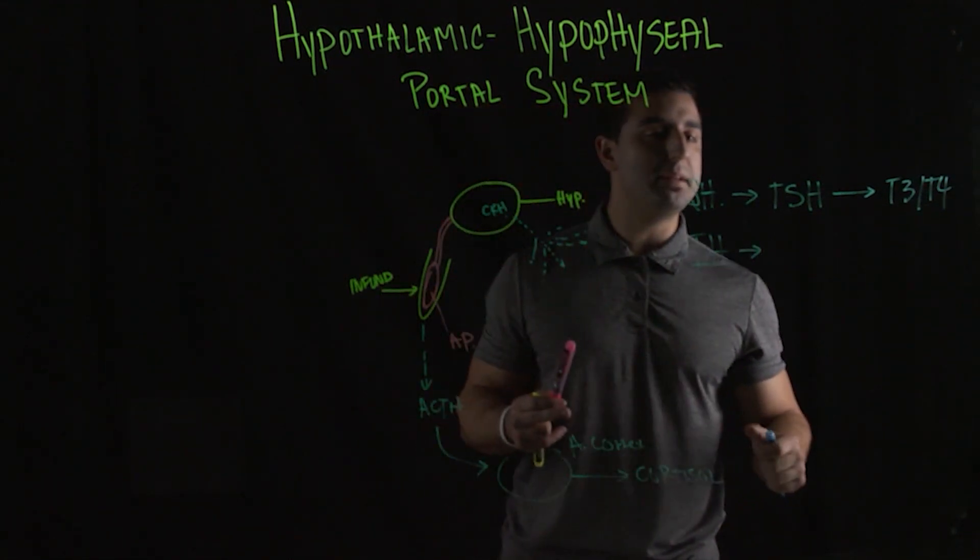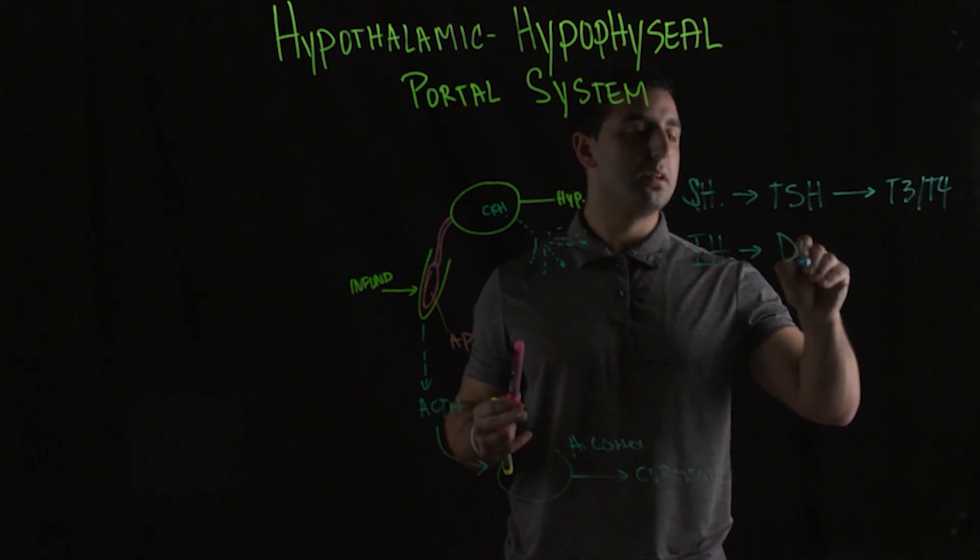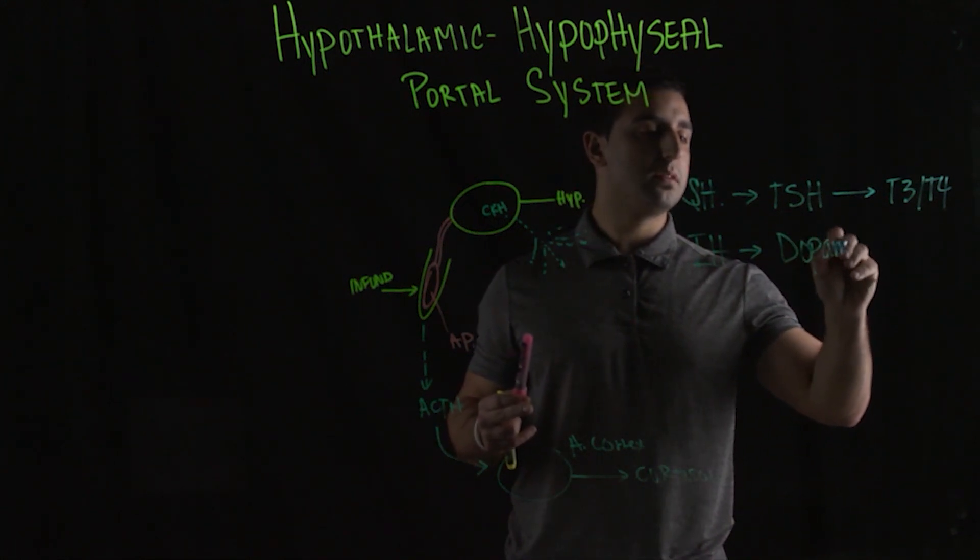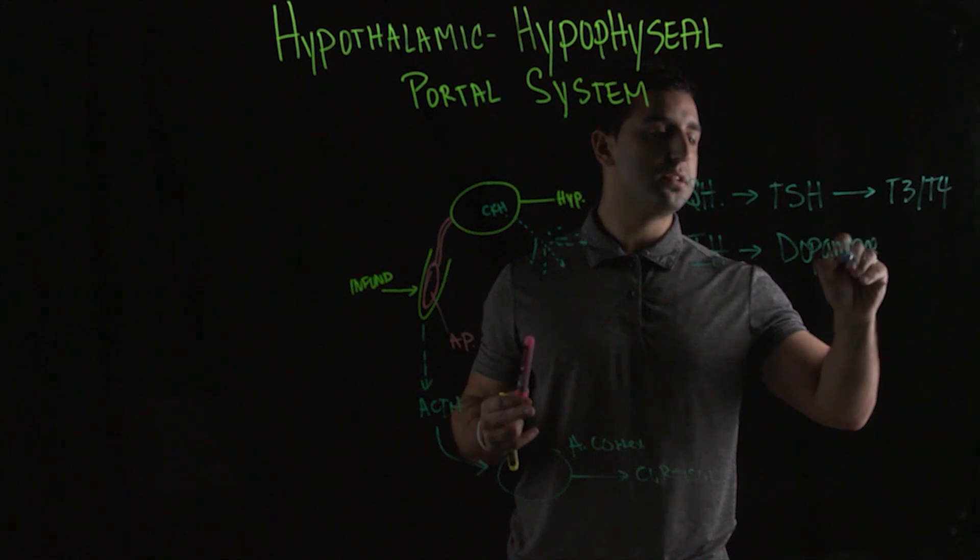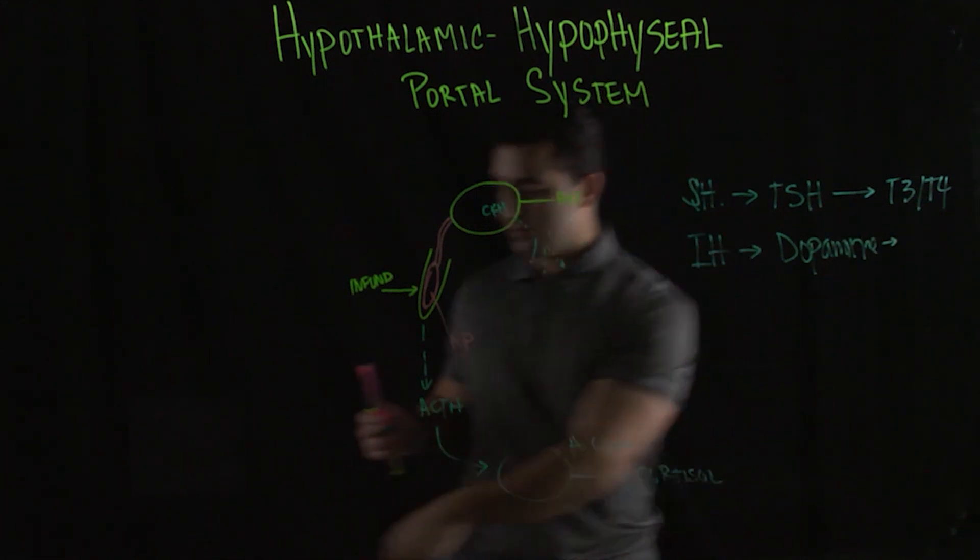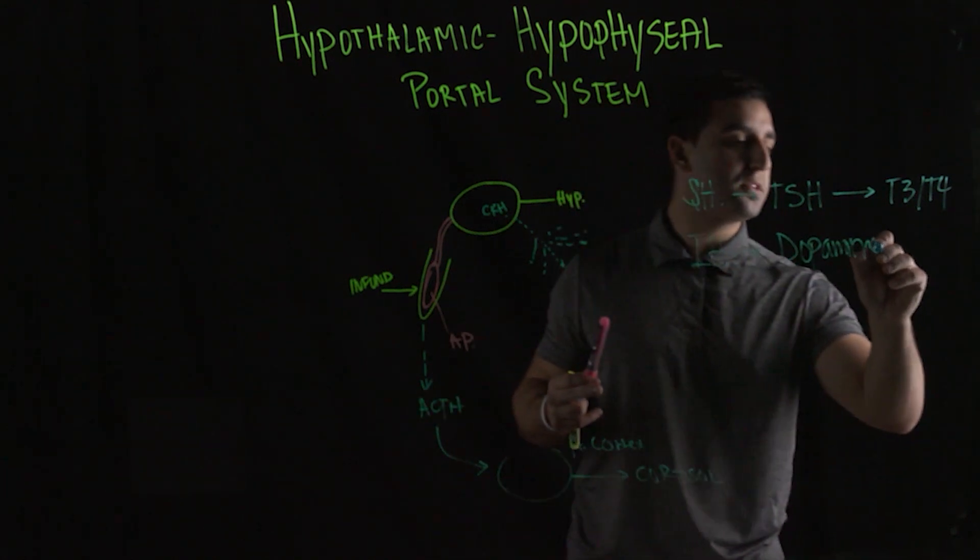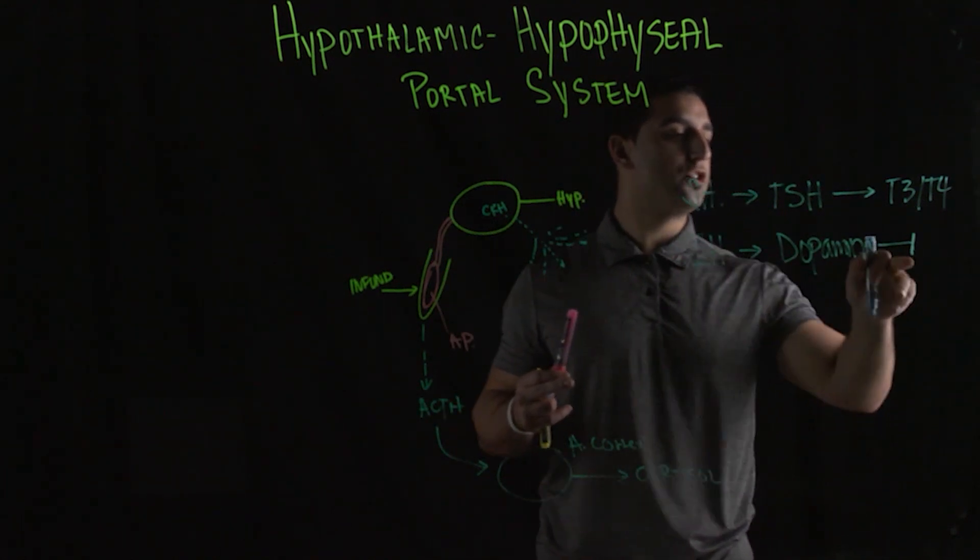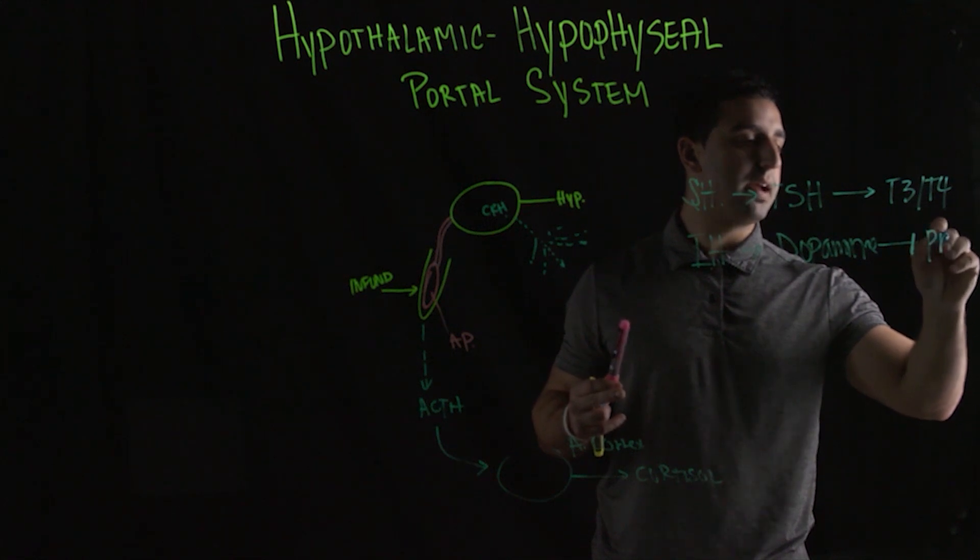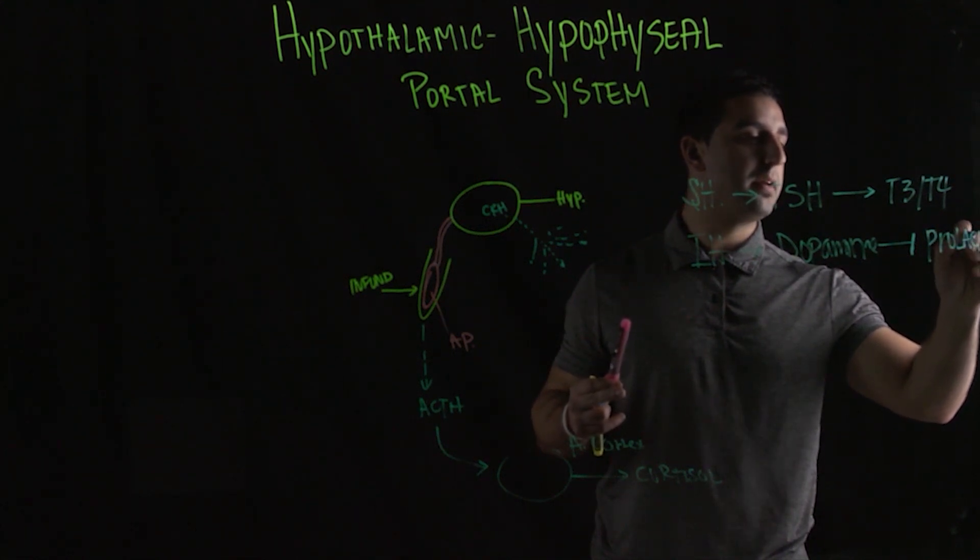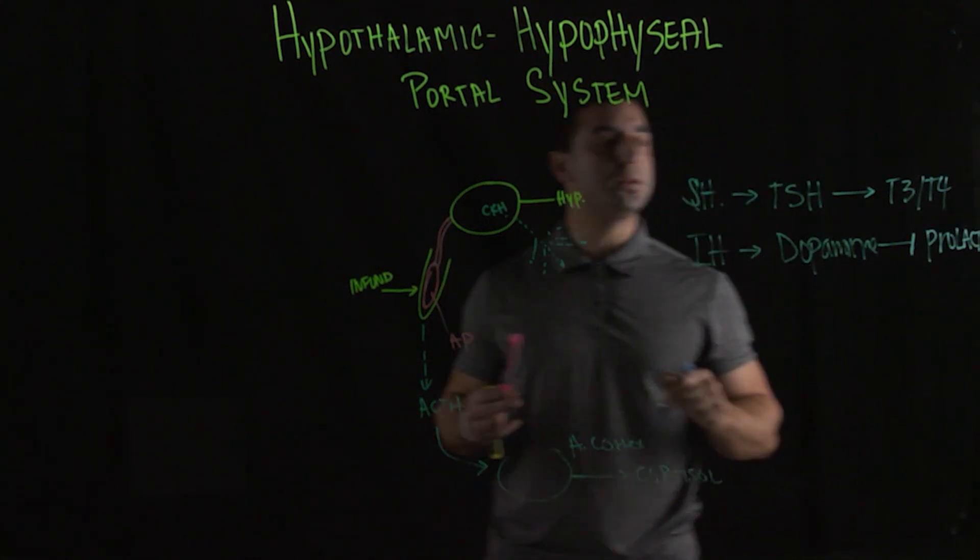Dopamine is used to inhibit prolactin. If you ever see, for example, arrows versus this side, this is showing an inhibitor, prolactin. And prolactin, we remember that it was responsible for the production of milk.